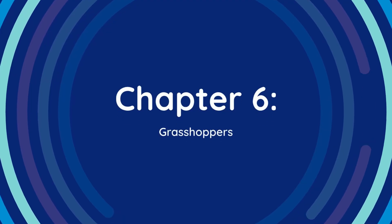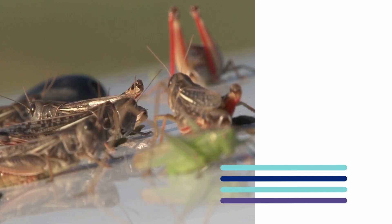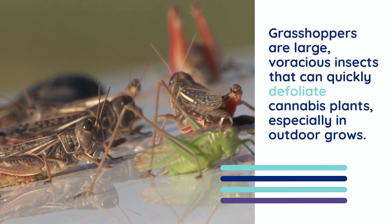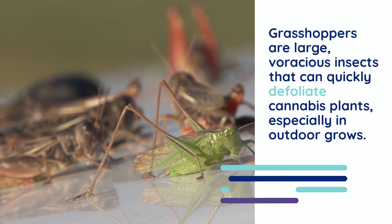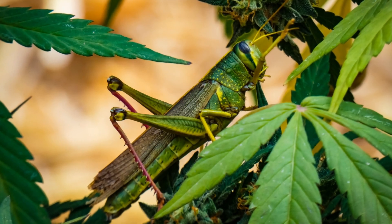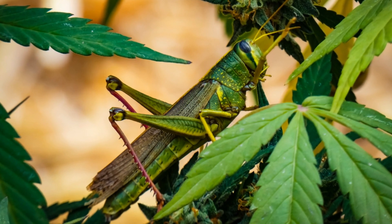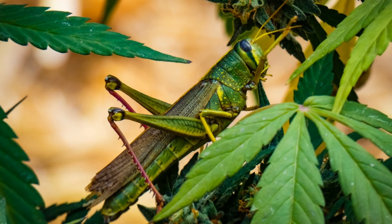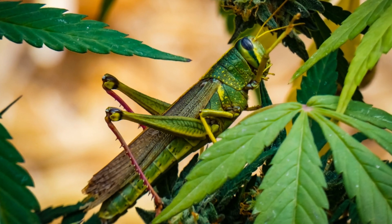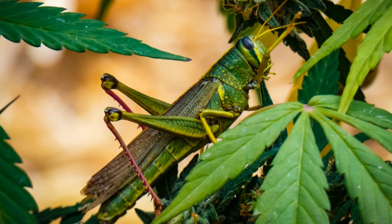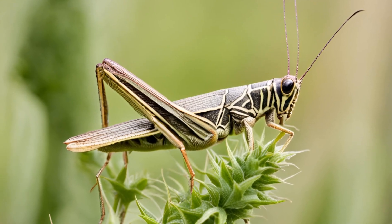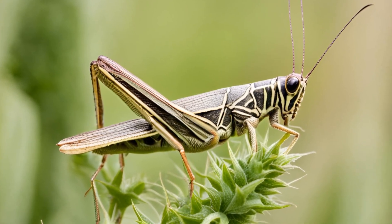Chapter 6: Grasshoppers. Grasshoppers are large, voracious insects that can quickly defoliate cannabis plants, especially in outdoor grows. These pests are mobile and can move from plant to plant, causing extensive damage in a short period. To identify grasshoppers, look for large holes in leaves and the presence of the insects themselves, which are usually green or brown and easily visible. They tend to be most active during the day, making them relatively easy to spot and monitor.